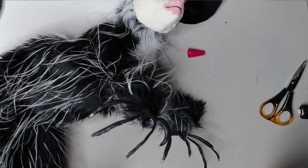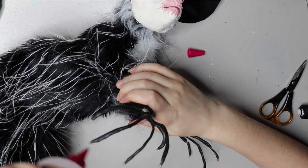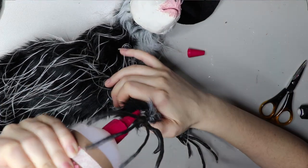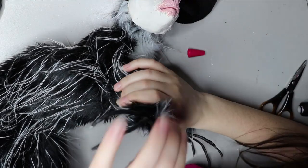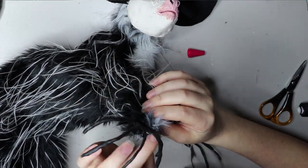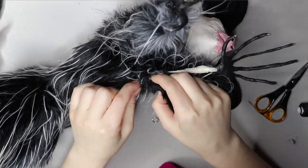I normally use this tacky fabric glue to stick the fur to the hands, but this time, considering the material that I used for the hands, it didn't actually stick. So I had to use a different type of glue and I just used some super glue and it stuck perfectly.